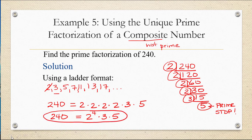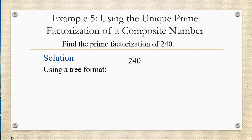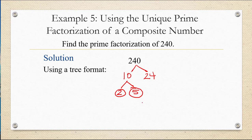Another method that's commonly used is the tree diagram method. Using a tree format, we break off branches of 240. For this method, you don't have to use prime numbers — you can use any factors of 240 that multiply together to give you that number. For example, you might immediately write it as 10 times 24. Then you continue to break up each number into its factors until you have only prime factors. For example, 10 breaks up into 2 times 5, and we stop there because both 2 and 5 are only divisible by themselves and 1, so these branches have ended.